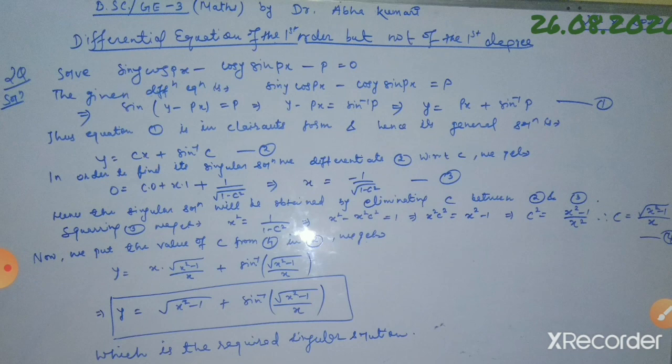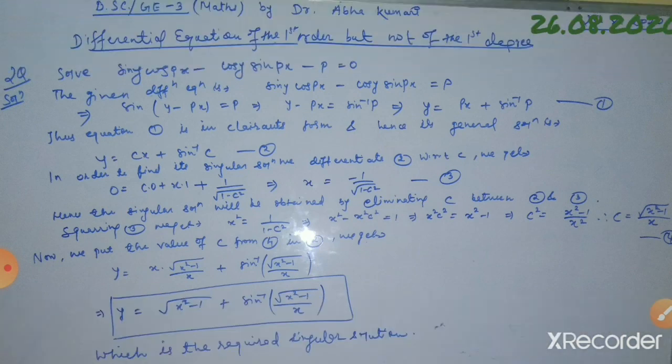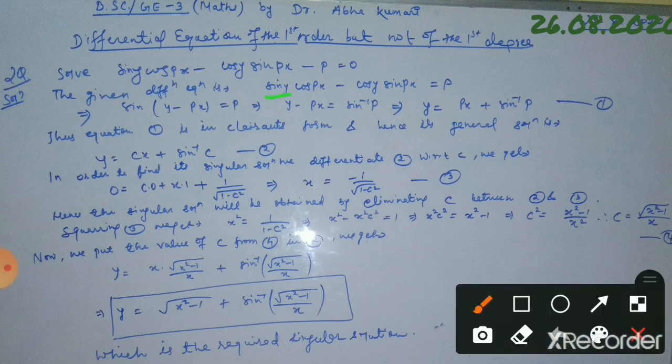In order to change it into Clairaut's equation, first we understand the concept of the equation and see in which form we can convert it so that we can easily make it into Clairaut's equation. The given differential equation is sin(y)·cos(px) minus cos(y)·sin(px) equals p. The left-hand side equals sin(y minus px), which equals p.